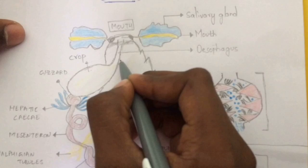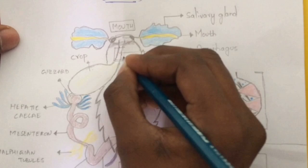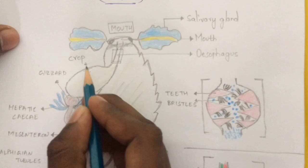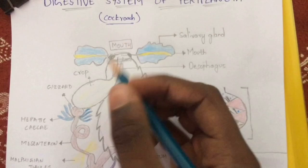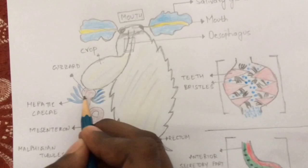The esophagus leads to the opening of a distensible sac-like structure known as the crop. The crop mainly leads to the opening into the gizzard. In humans, the function of the stomach is storage of food; in the same way, the function of the crop in cockroach is storage of food.